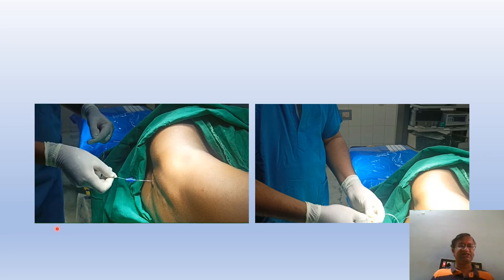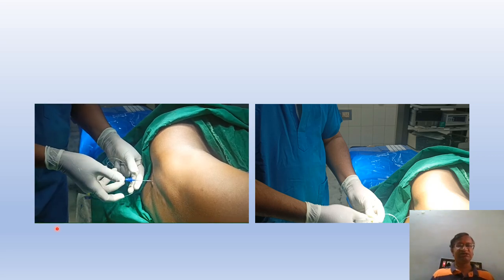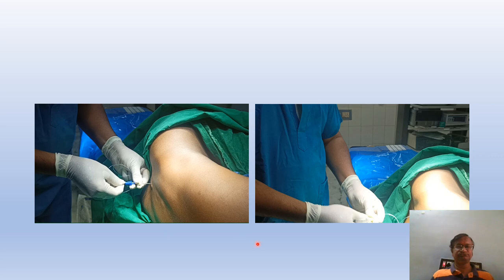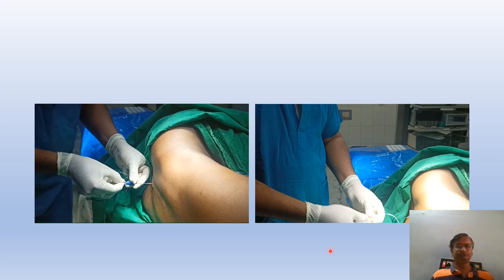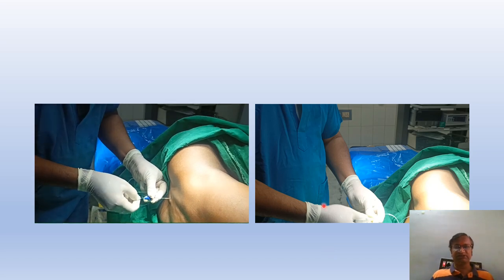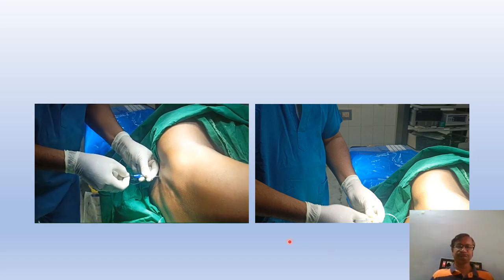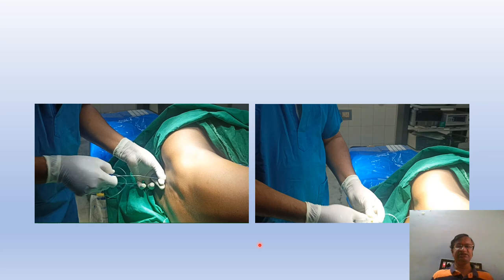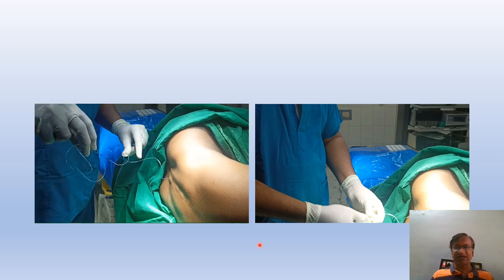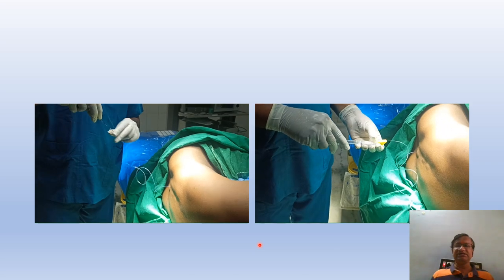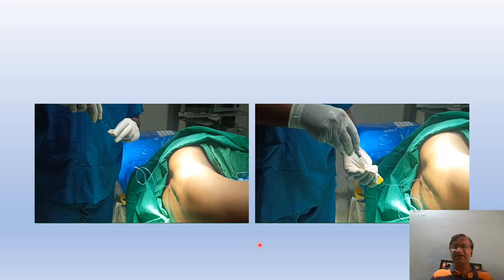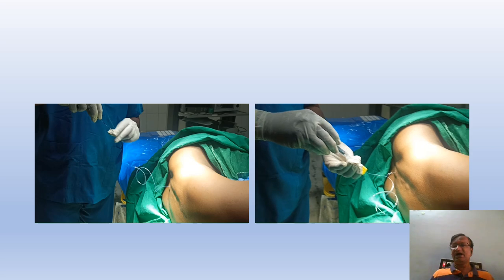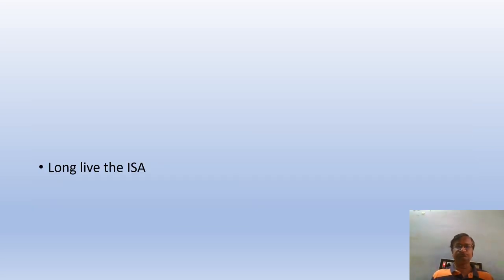Now I am inserting the catheter. The catheter insertion is completed within one and a half minutes. You can see I am attaching the syringe, aspirating, and then administering. If you had pre-flushed the catheter, the aspiration result would confuse you — that is why I do not pre-flush the catheter before insertion. Thank you.